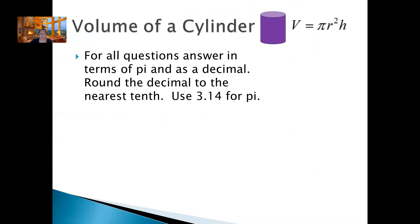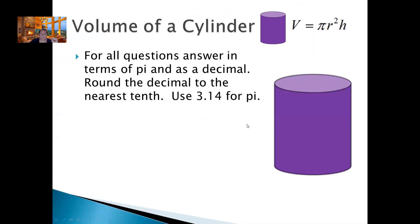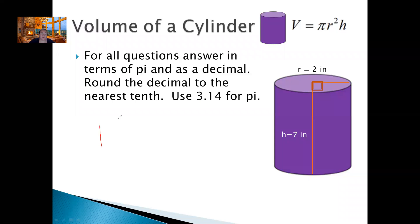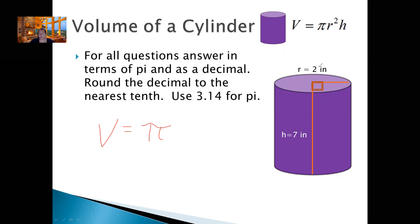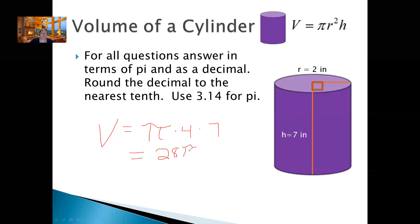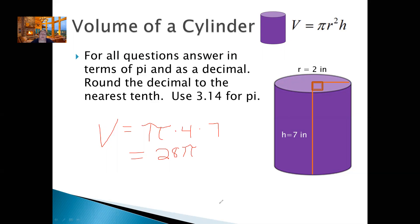Alright, so we're going to answer in terms of pi first and then as a decimal so you know how to do it both ways. Here's a cylinder — there's the height, there's the radius. Height is 7, radius is 2. So let's plug this into the formula: volume equals pi times r squared. R is 2, so 2 squared means 2 times 2, which is 4. So pi times 4 times height, which is 7. Four times 7 is 28, so it's going to equal 28 pi. If they tell us to leave our answer in terms of pi, we are done.